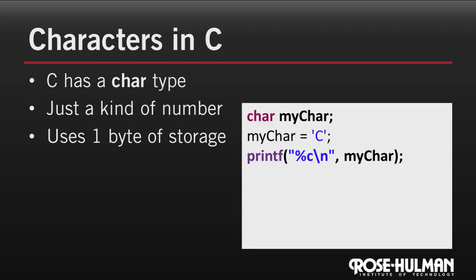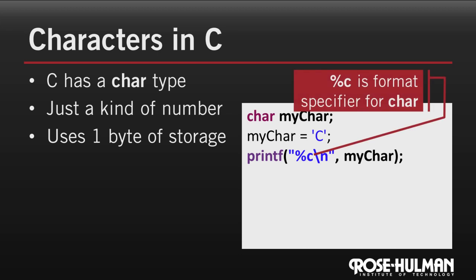This code declares a variable, mychar, of type char, and then initializes it to the character C. We use single quotes around a single character to represent a character in C. In the third line, we use the %c format specifier to print out that single character. This does what we might expect, and it prints out the character C.